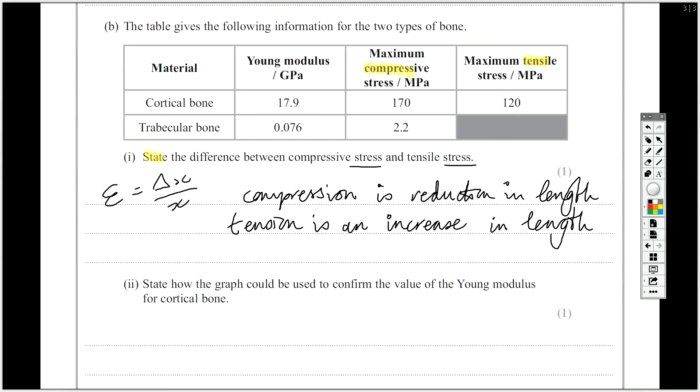Again, use the definitions that you've been given. If you're asked anything about any of these things, you've probably got a formula which will help you define it so that you're not waffling on about something that's irrelevant. Use the formula in physics. How would the graph be used? Again, we're stating how the graph would be used to confirm the value for Young modulus for cortical bone. Earlier on, I talked about what Young modulus was.